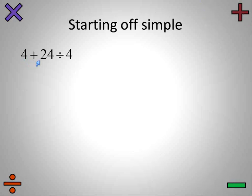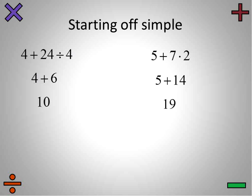Let's start off simple with two operations. We have 4 plus 24 divided by 4. The operations are addition and division — which one do we do first? We should do division before addition. Our multiplication and division get done before addition and subtraction. So 24 divided by 4 gives us 6, and then we do the addition last: 4 plus 6 is 10. Another example: 5 plus 7 times 2. We do multiplication before addition, so 7 times 2 is 14, then 5 plus 14 is 19.